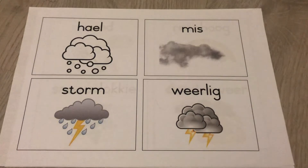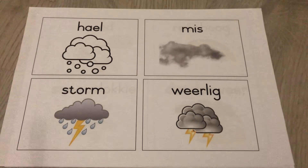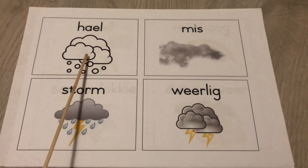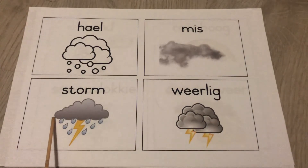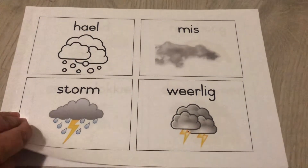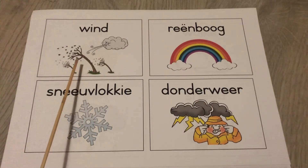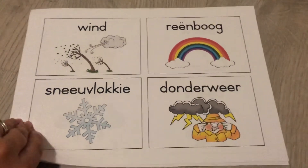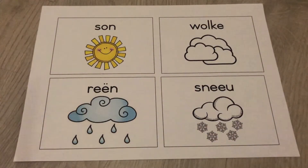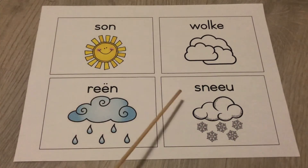So we're going to say these words again now. This time I'm going to say the word for you and you are going to say the Afrikaans word after me. Heil. Mis. Storm. Weerlig. Wind. Reenboog. Sneeuwflokkie. Donderweer. Son. Wolke. Reen. Sneeuw.